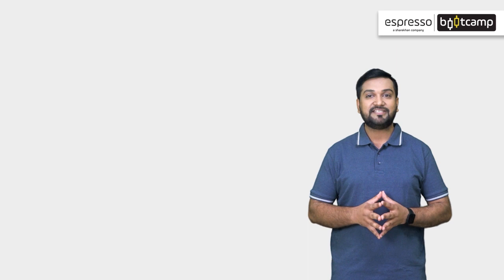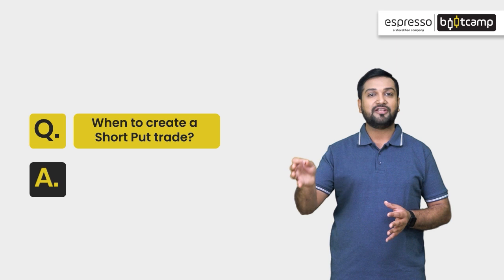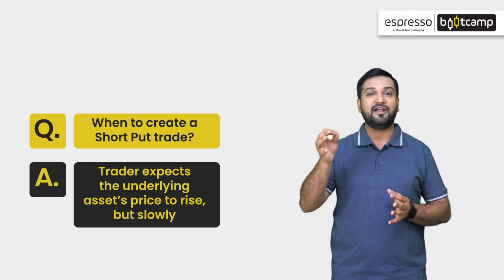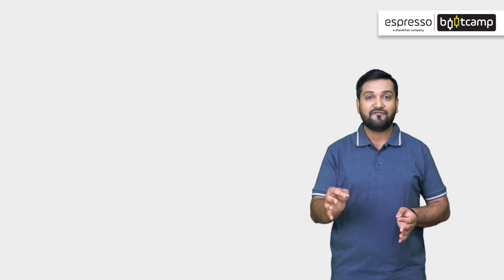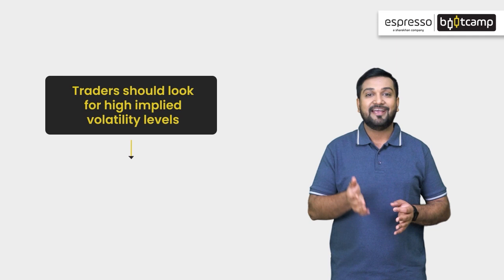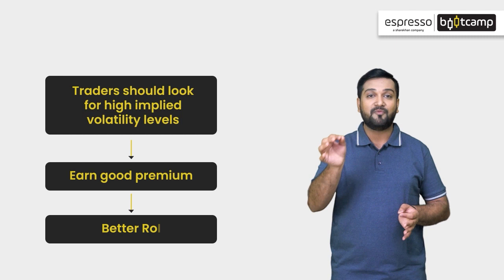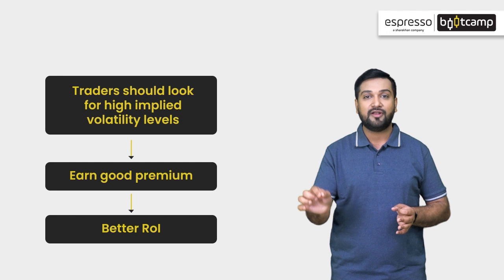When should we ideally execute a short put trade? Option traders use the short put option strategy only when they think that the price of the underlying asset may slowly rise in the near term. The best situation under which a short put trade can be created is when the implied volatility is high. This way, traders can earn a good premium, which helps them improve return on investment. For discovering the best volatility to sell a put, the trader can use the implied volatility rank or implied volatility percentile.